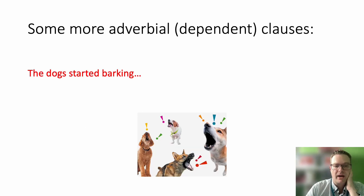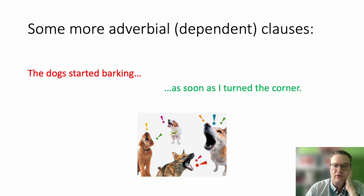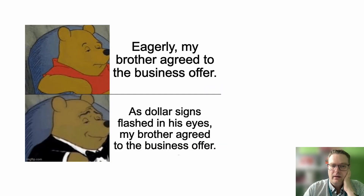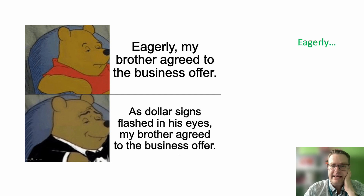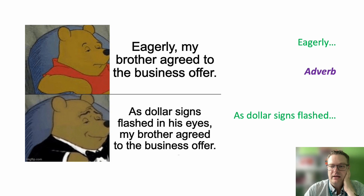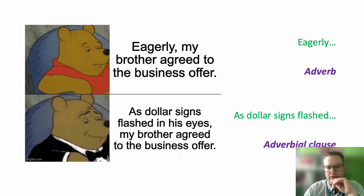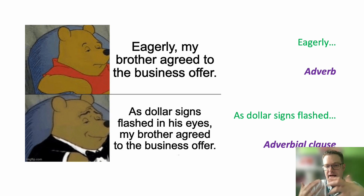Here's another example: The dog started barking — that's an independent clause. As soon as I turned the corner — as soon as I turned the corner is telling you about the dog starting to bark. What about: Eagerly, my brother agreed to the business offer — great, that's an adverb, that works. As dollar signs flashed in his eyes, my brother agreed to the business offer. That's an adverbial clause, because it's like a whole clause doing the same job as the adverb — even though there's no adverb in that clause, the whole thing is acting adverbially. And often people will say it makes your writing sound a bit more exciting, adds a bit more colour to it.